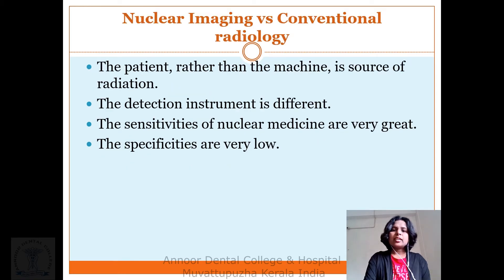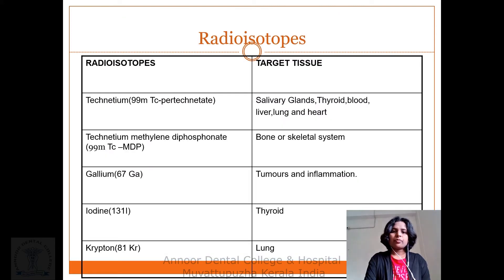Nuclear imaging versus conventional radiology: the patient is the source of radiation, the detection instrument is different, and the sensitivity of nuclear medicine is very high with great specificity. There are certain radioisotopes — technetium pertechnetate — that target the salivary glands, thyroid, blood, liver, lung, and heart.